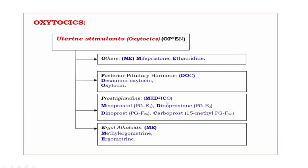Next, Prostaglandins. The drugs — looking at the bold letters M, D², C: M means Misoprostol, D means Dinoprostone, one more D means Dinoprost, C means Carboprost.